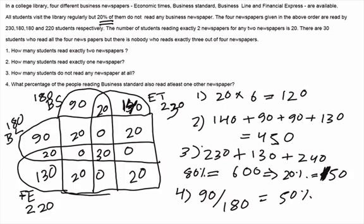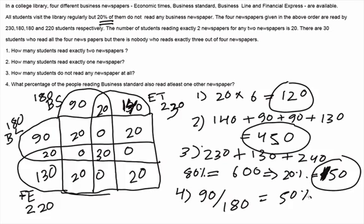So the answers that I was looking for, for the first one was 120, for the second is 450, for the third is 150 and for the fourth is 50%. With this, I would like to wrap up this session. Please provide feedback via Twitter at my Twitter handle at the rate Ravianda. Thank you.